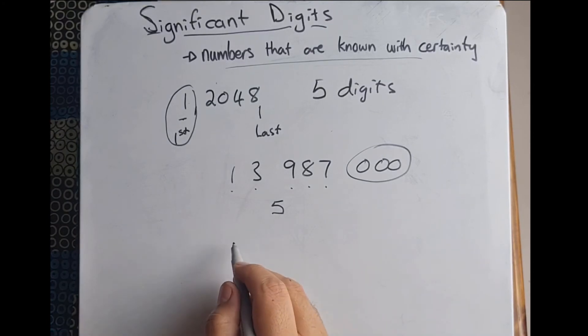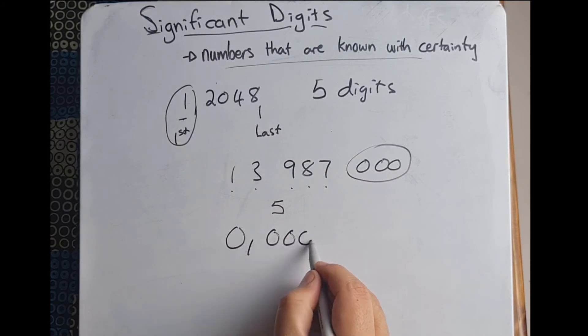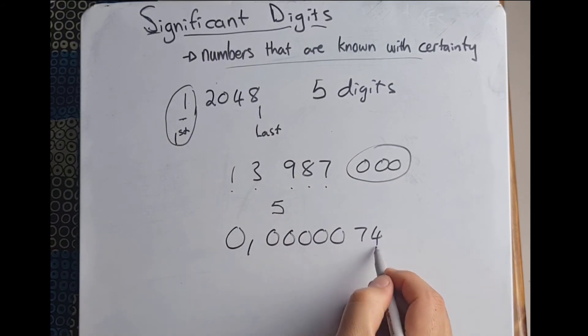What about this number: 0.3457? Again, the zeros at the beginning of the number are not considered significant, however they are still important placeholders and must be written. So how many significant digits does this number have?